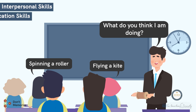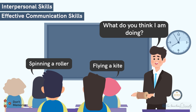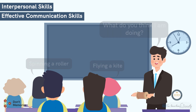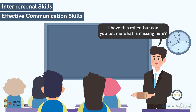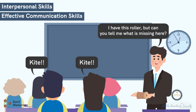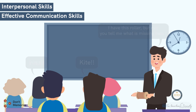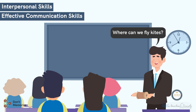It also paves the way for effective communication. Now once the students have finished responding, let's continue by asking them what's missing — even though we have the roller in our hand. The students may respond 'kite.' Moving on, ask them where can we fly the kites.